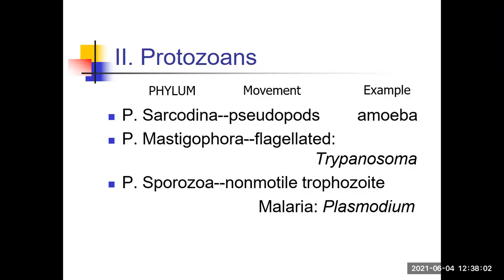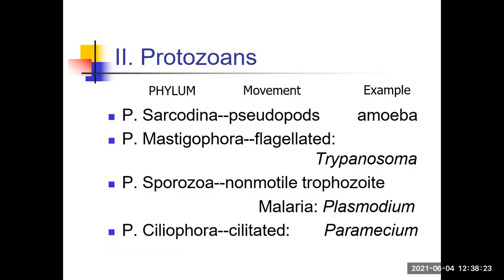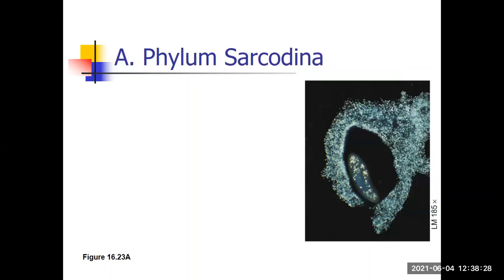The first group is phylum Sarcoidina, also called the sarcoidines. The best example is the amoeba. Here's a photograph at only 185 power — these are fairly large compared to the paramecia that were whizzing around in the lab. You can see the pseudopodia pointed out on the slide. Pseudopods are how amoebas move: you see the cytoplasm streaming within these arms as they form, the amoeba engulfs prey like a paramecium — this is how they move and also how they eat.